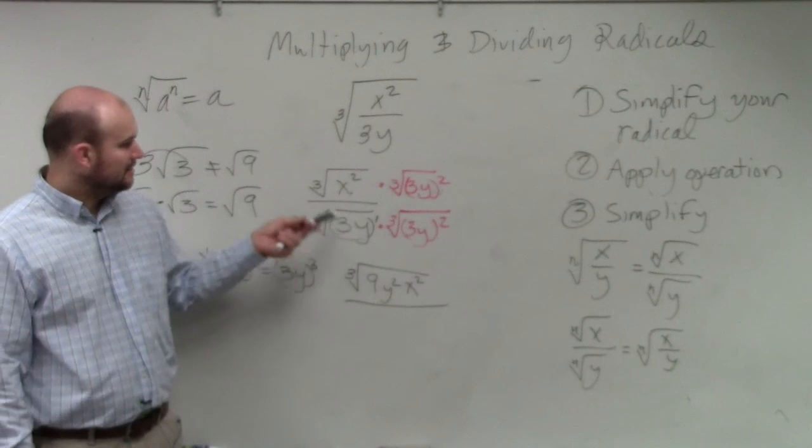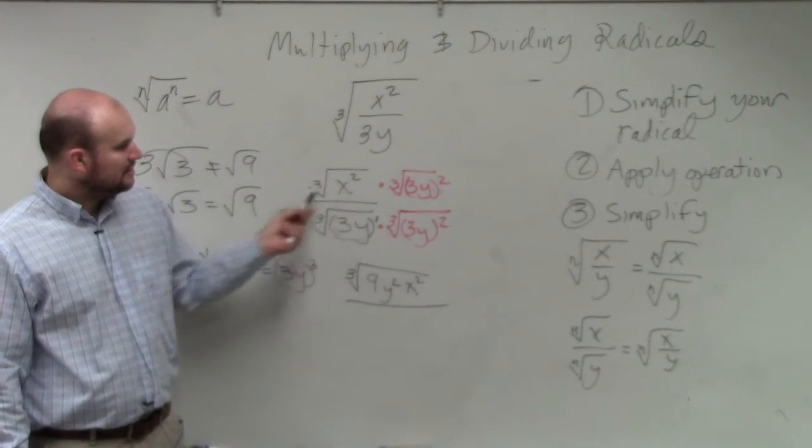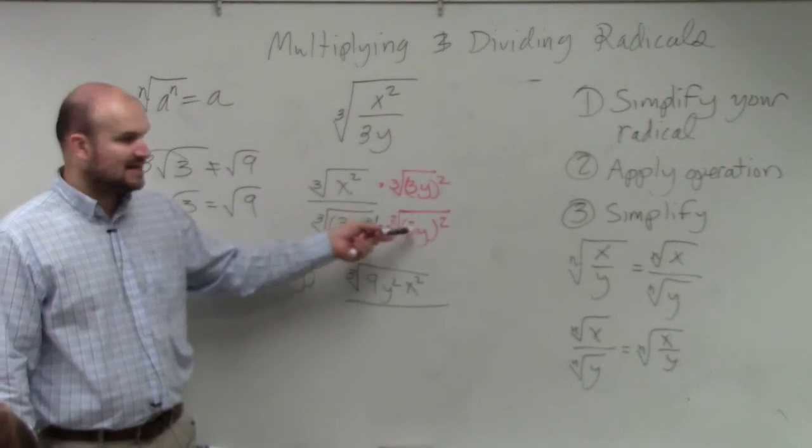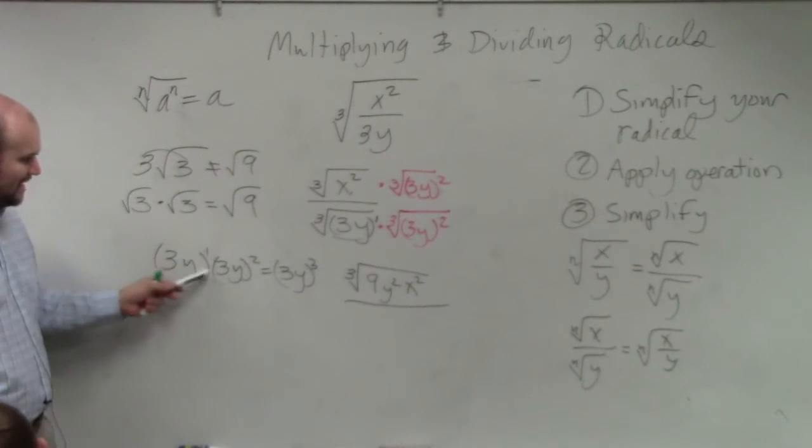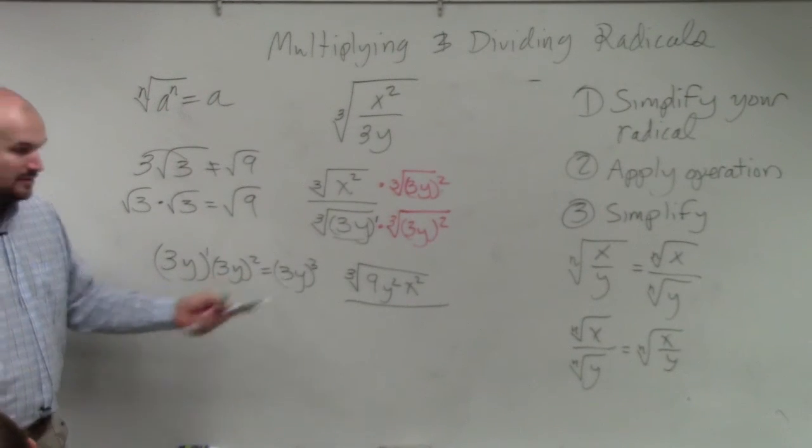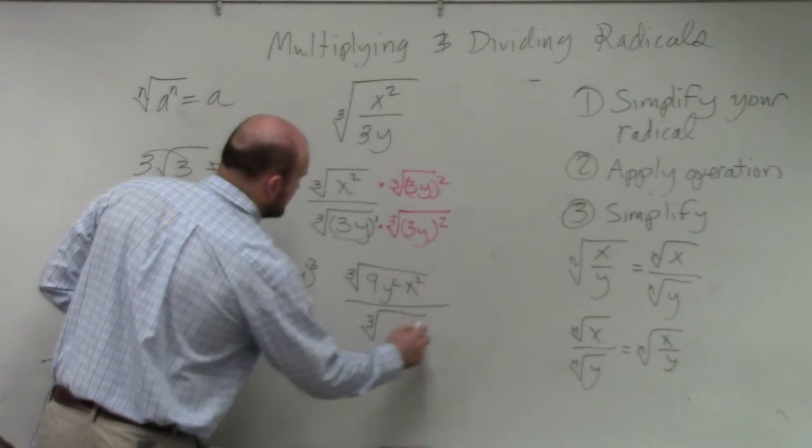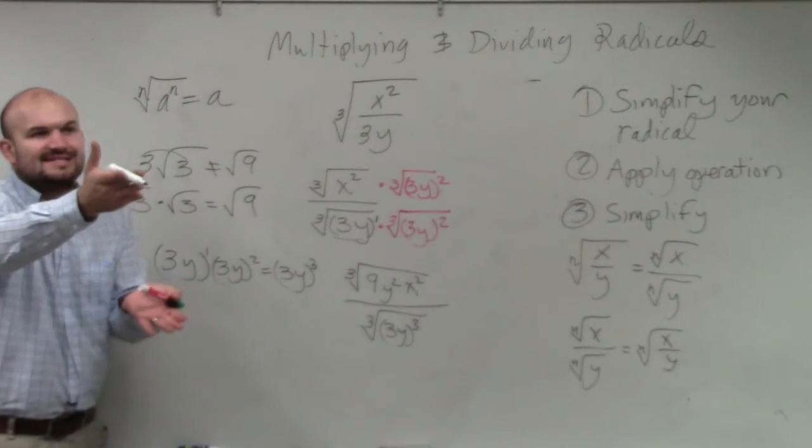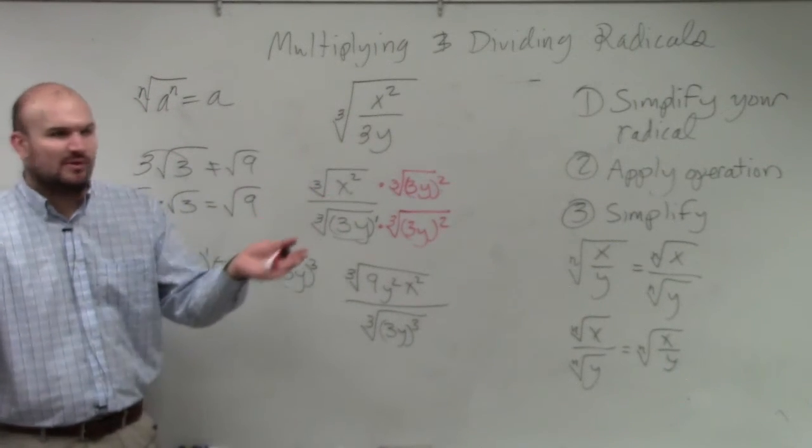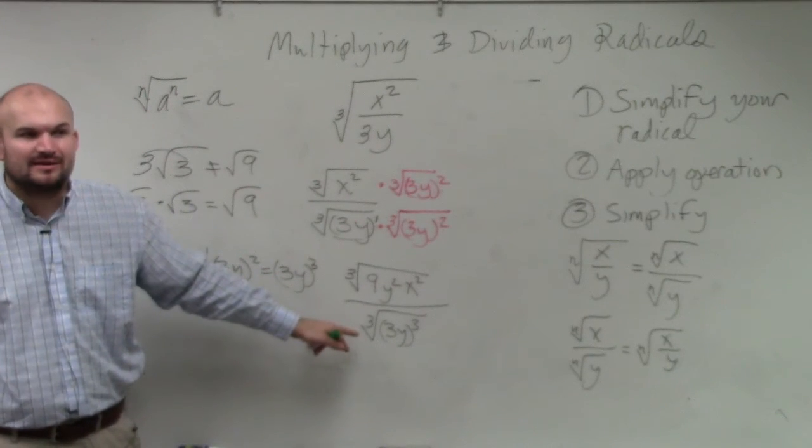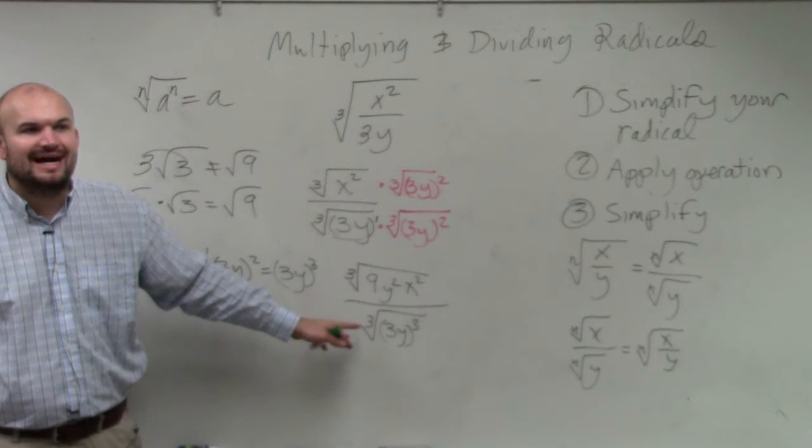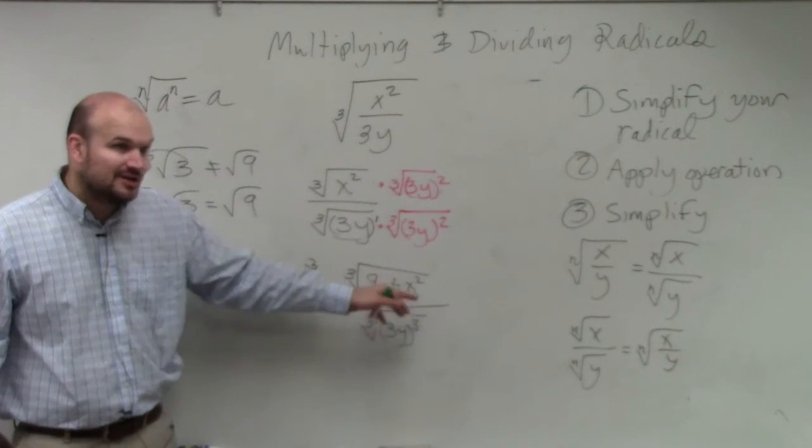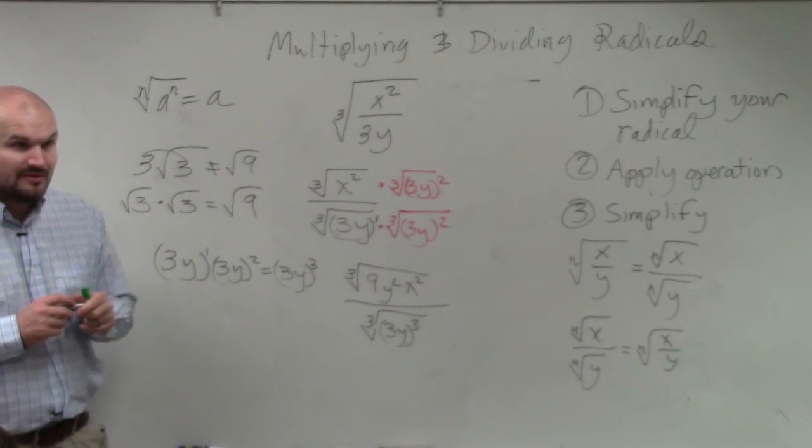Now, let's do the denominator. I have the cube root of 3y times the cube root of 3y squared. So I just multiply 3y times 3y squared. What's 3y times 3y squared? 3y cubed. So it's the cube root of 3y cubed. The reason why I didn't say don't think about numbers like 9 or 6 or whatever it was, because what can I apply here? I can apply the identity element, right? The cube root of 3y cubed is just going to be 3y.